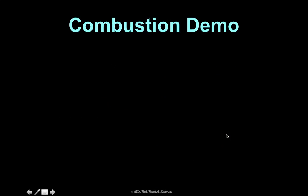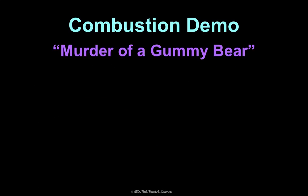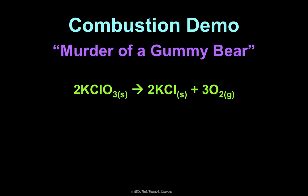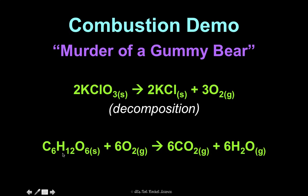I'm going to demonstrate the combustion reaction with the murder of a gummy bear. The first part is a decomposition reaction — we'll watch potassium chlorate decompose into potassium chloride and oxygen. We do this to get that oxygen gas so that when we add the gummy bear, they can burn and make carbon dioxide and water. That's going to be the combustion we observe.